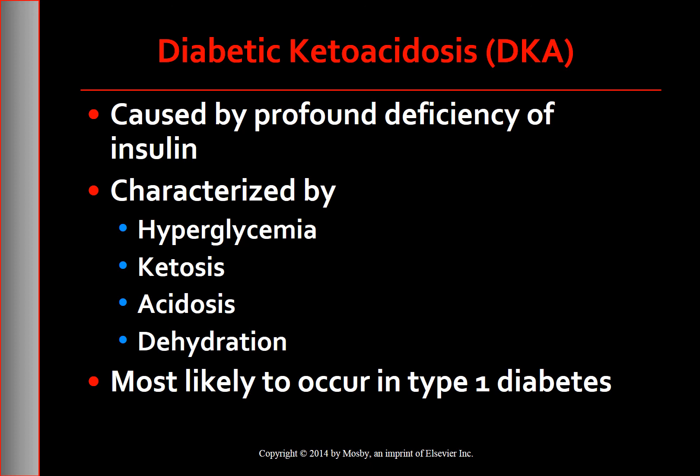Diabetic ketoacidosis is caused by a profound deficiency of insulin and is characterized by hyperglycemia, ketosis, acidosis, and dehydration. There is insulin deficiency and as a result, an increase in counter-regulatory hormone release. It is most likely to occur in people with type 1 diabetes, but may be seen in people with type 2 diabetes in conditions of severe illness or stress when the pancreas cannot meet the extra demand for insulin. The most common reason is infection.